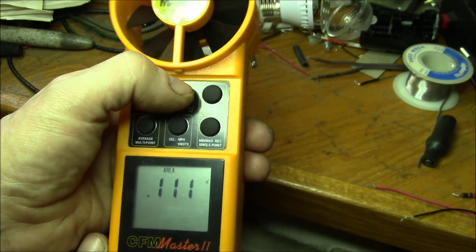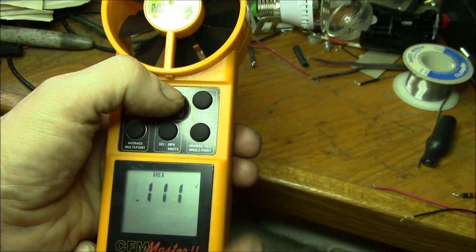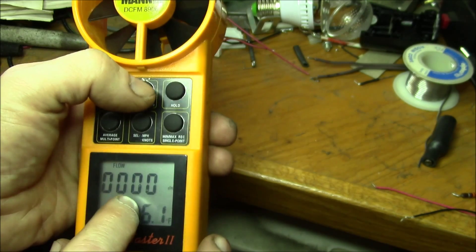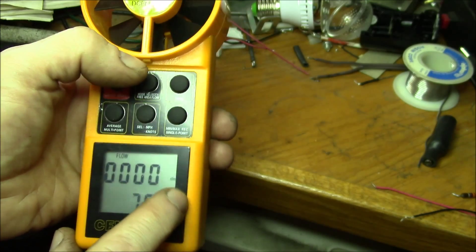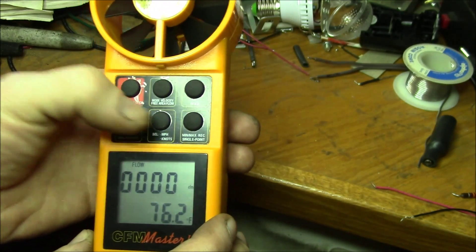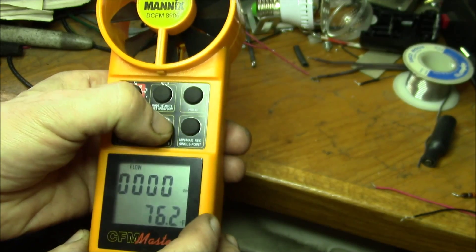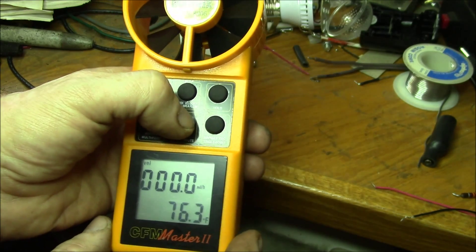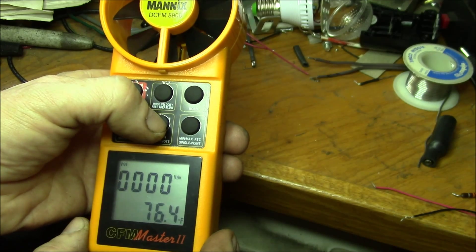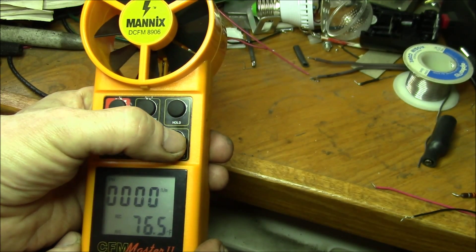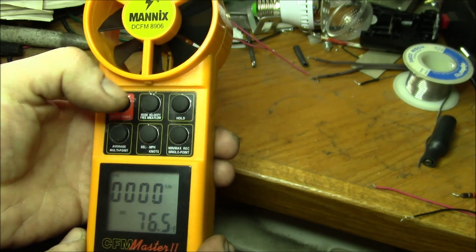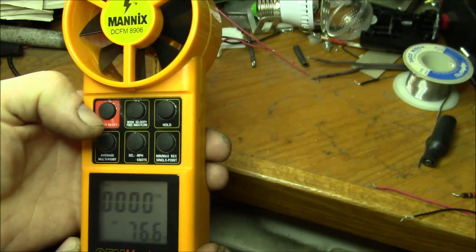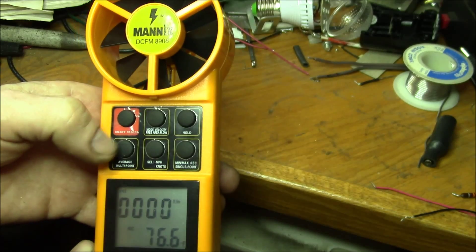You can program the area of the duct or fan you're looking at in square feet, and then that changes to a flow rate. It'll tell you cubic feet per minute. You can change from feet per minute, you can get miles per hour, you can get knots and feet per minute. You can get average and peak, minimum, maximum, and average. There's a hold.